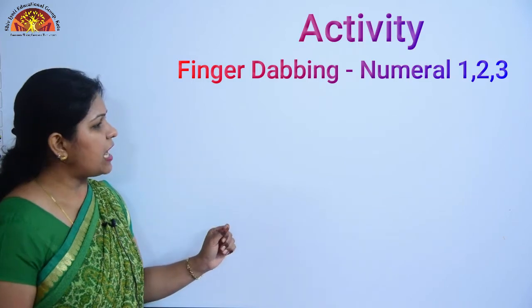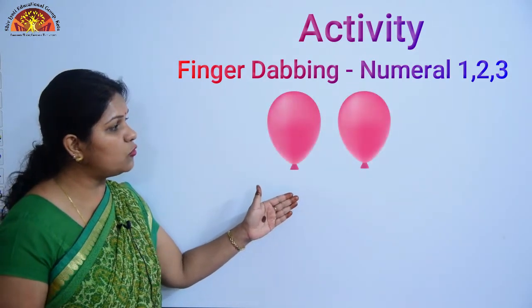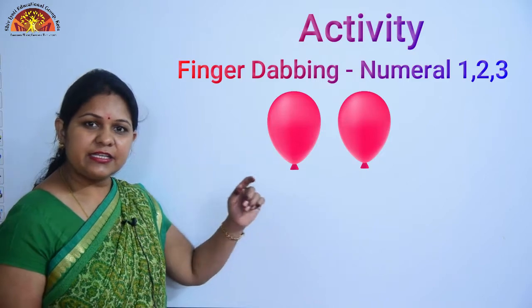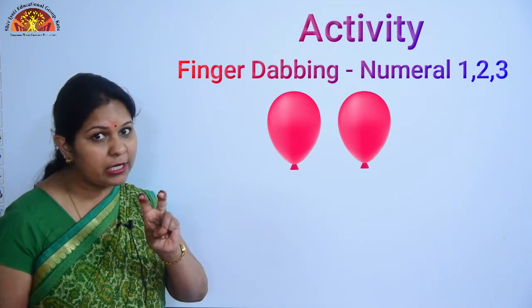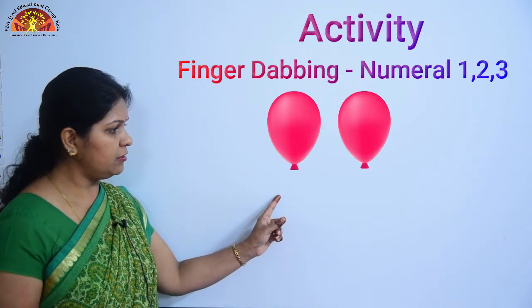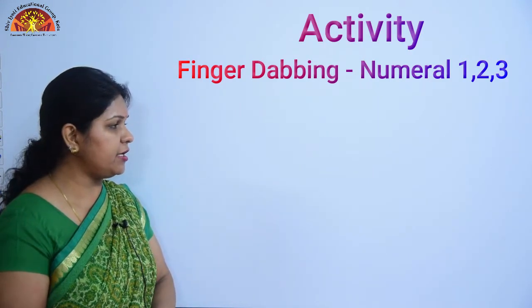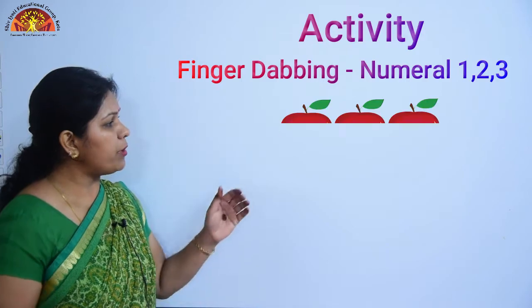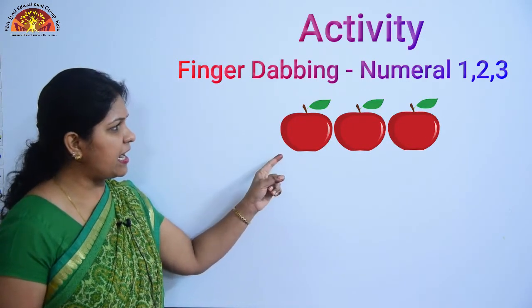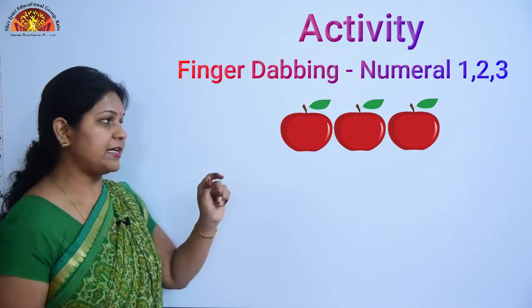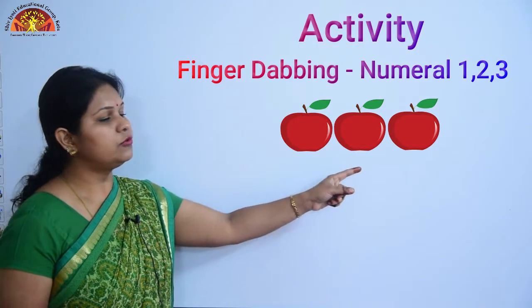Excellent. Now tell me kids, how many balloons are there? Yes, there are 2 balloons — 1, 2. Now tell me, how many apples are there? Yes, there are 3 apples. Let's count: 1, 2, 3.